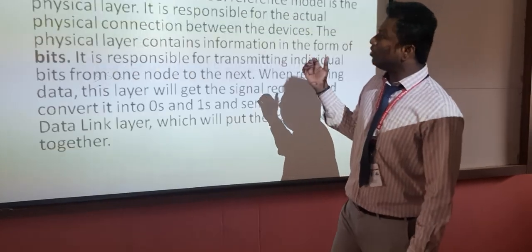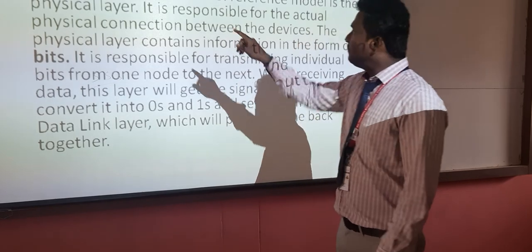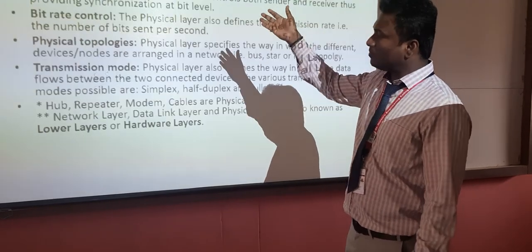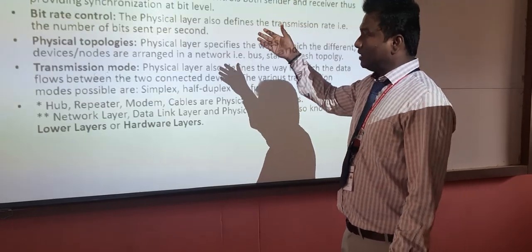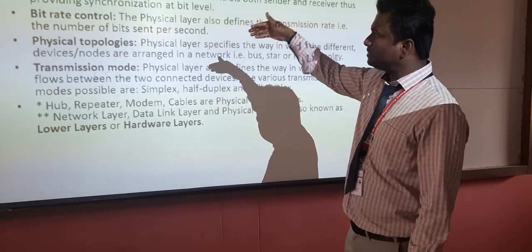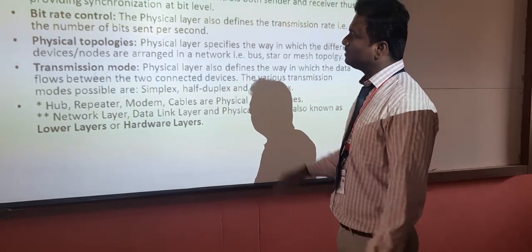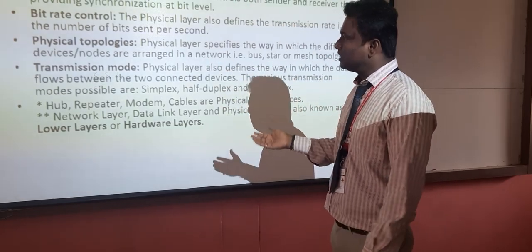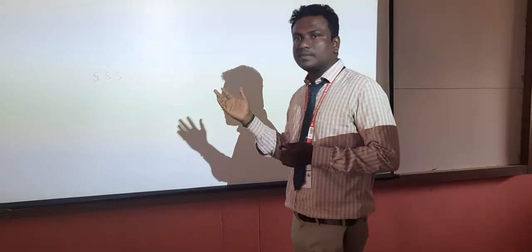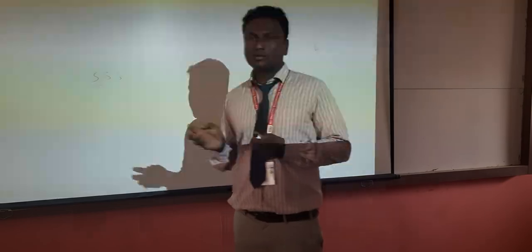The physical layer is layer 1. Data in the physical layer is in the form of bits. Functions include bit synchronization, bit rate control, physical topologies, and transmission mode. These are the functions under the physical layer.